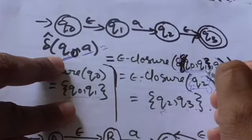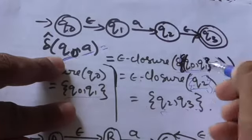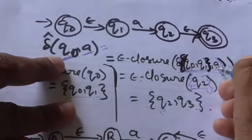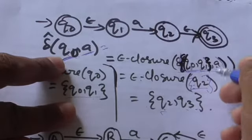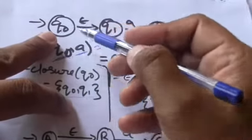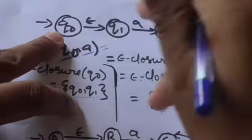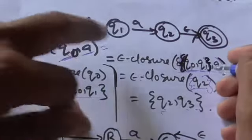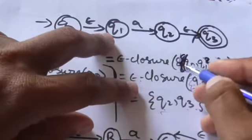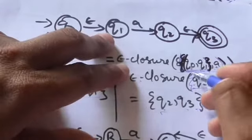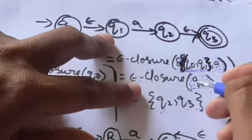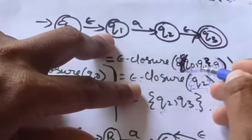Now apply the input symbol a to this set of states {q0, q1}. First apply a to q0, then apply a to q1, and take the union of outputs. There is no transition from q0 for input symbol a. From q1 there is a transition for input symbol a to state q2. So we get a set having only one state, q2.